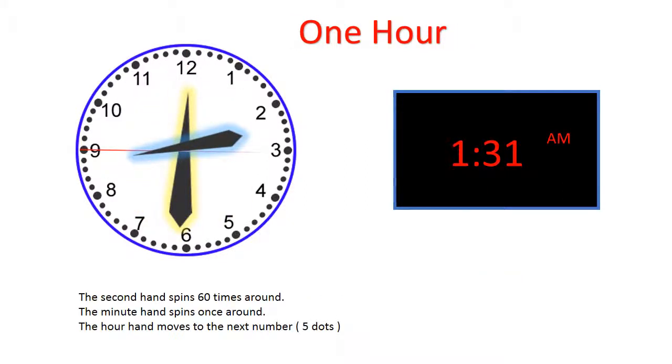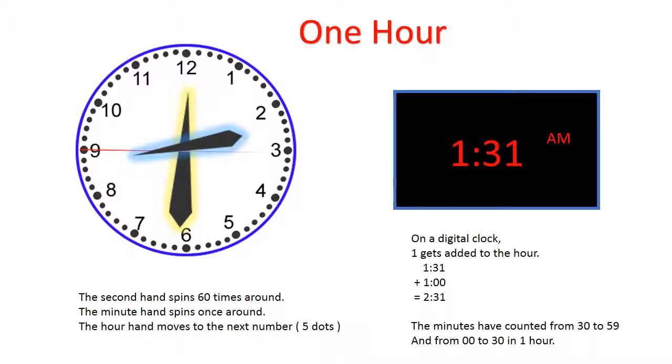One hour. The second hand spins 60 times around. The minute hand spins once around. The hour hand moves to the next number. On a digital clock, one gets added to the hour.